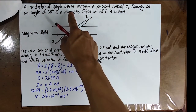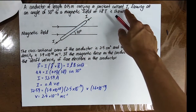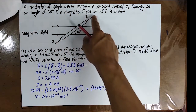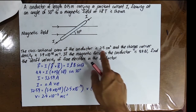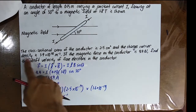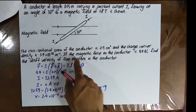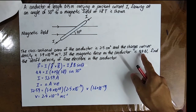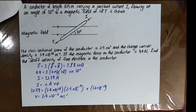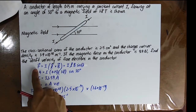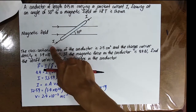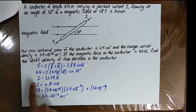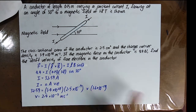Example: A conductor of length 0.15 m carries a constant current I at an angle of 30° to a magnetic field of 1.8 T. The cross-sectional area is 2.5 cm² and the charge carrier density is 3.4 × 10²⁸ per m³. The magnetic force on the conductor is 4.4 N. Using F = ILB sin θ, where θ = 30°, find the current I. Then use I = nAve to find the drift velocity of the free electrons.